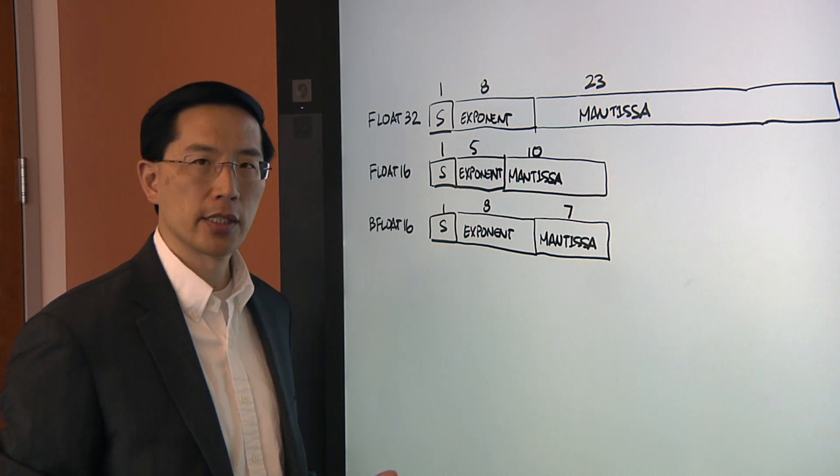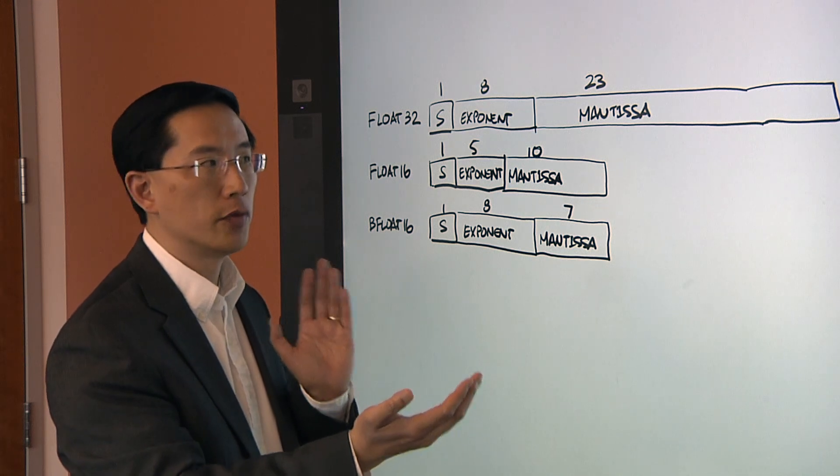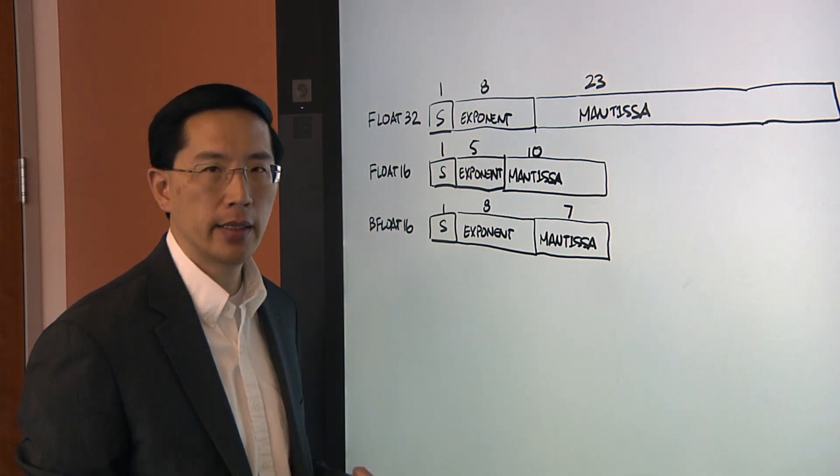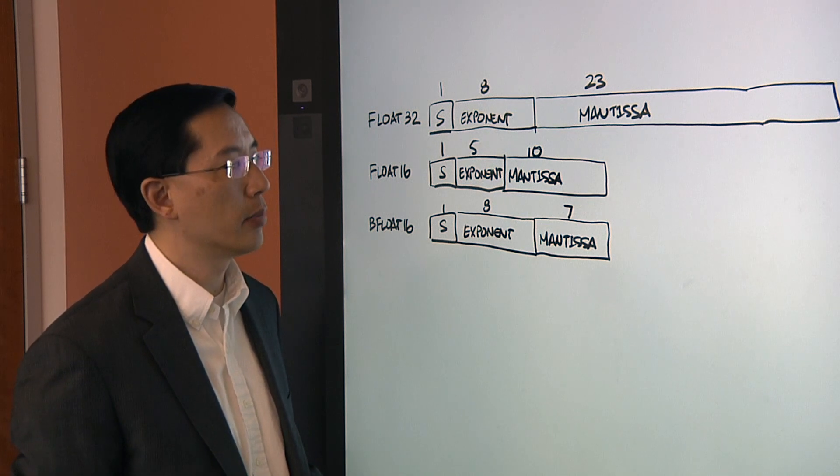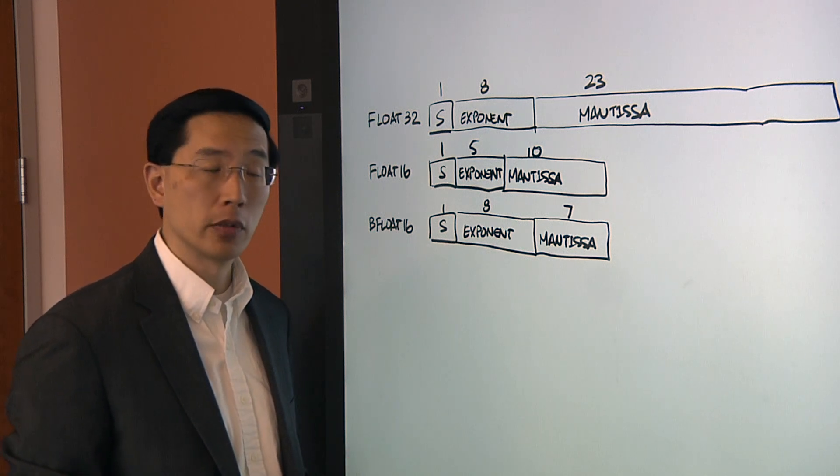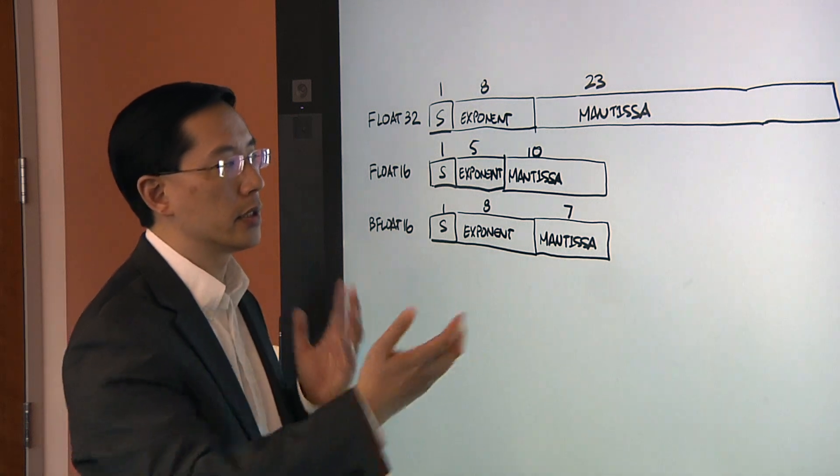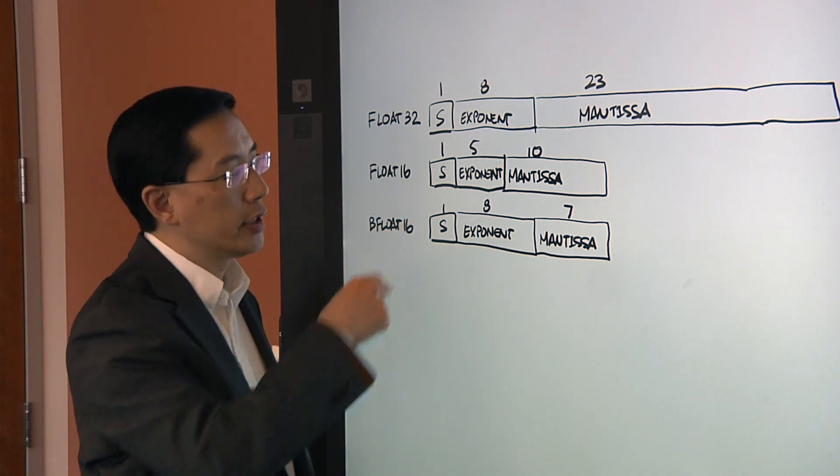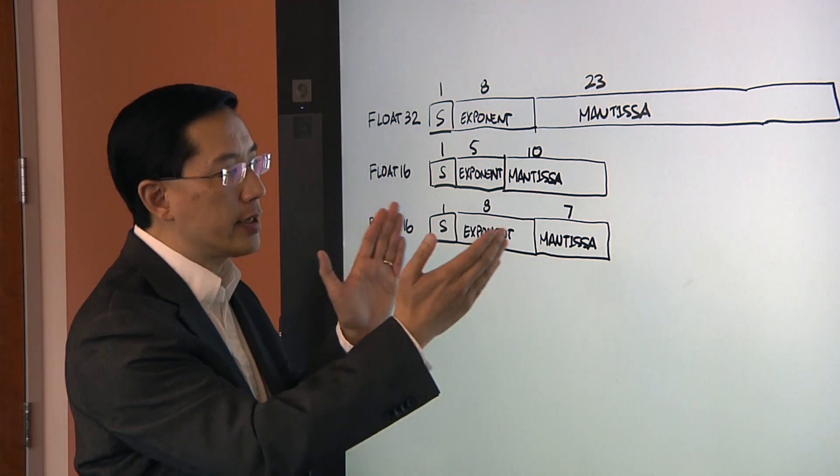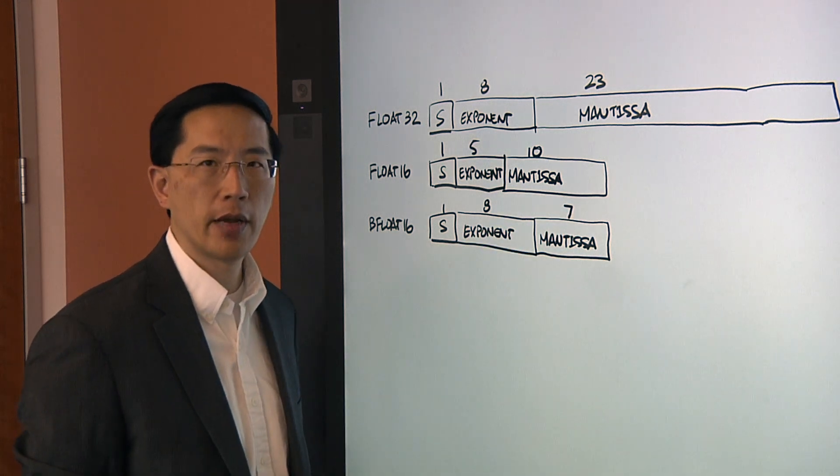And what people began to realize, especially in AI, was that the range that you need to cover was very important. And it was a little bit less important to have exactly the type of precision that was available in 32-bit floating point numbers. And so a new type of numeric format called BFLOAT16 was developed. What BFLOAT16 does is it rebalances those 16 bits. You have one sign bit, but to match the range of 32-bit floating point numbers, we went back to 8-bit exponents. And then the fractional part of the number, the mantissa, is now down to 7 bits.